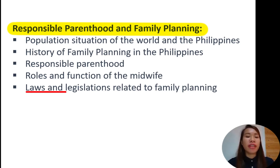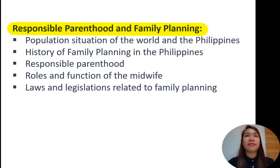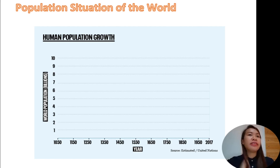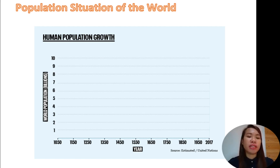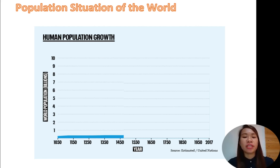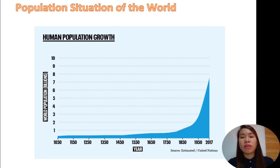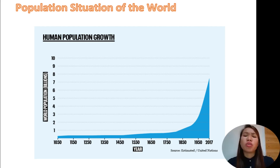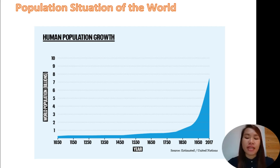And what are the different laws and legislation related to family planning? Here in this first table we can see a graph showing us on the y-axis the world population in billions and on the x-axis the number of years. As we can see, from 1850 we had a sudden increase in slope, and then very abruptly there was an increase in population. Having seen this trend in our population, we get an idea why there is a need for family planning.